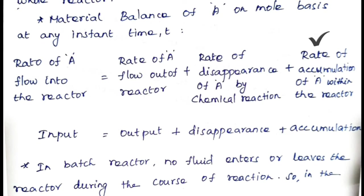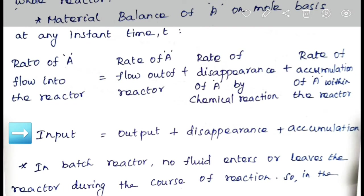We can write this equation simply as: Input = Output + Disappearance + Accumulation. This is easy to remember — whenever you write the performance equation, just recall that input equals output plus disappearance plus accumulation.